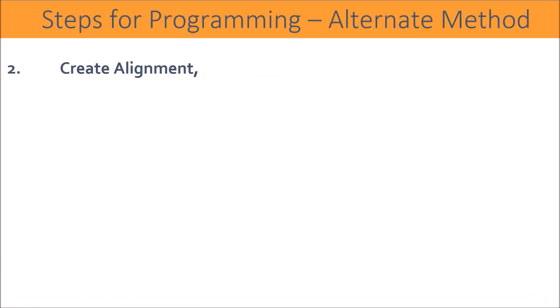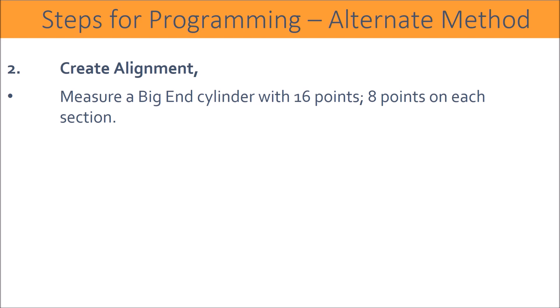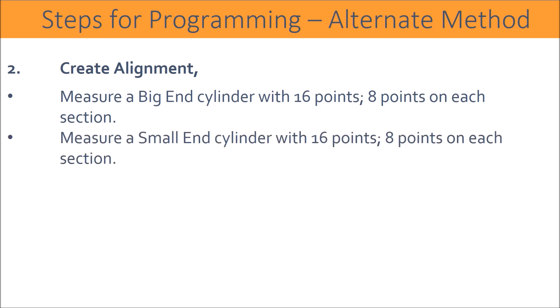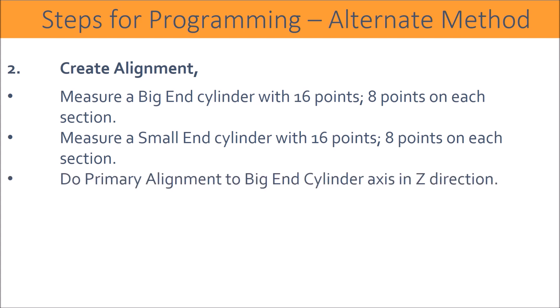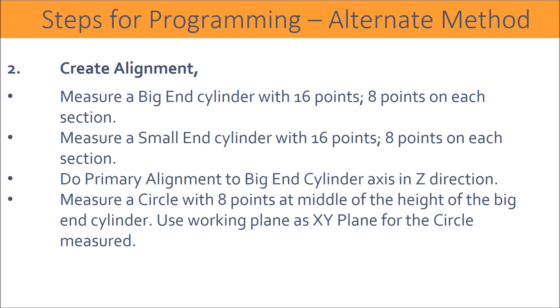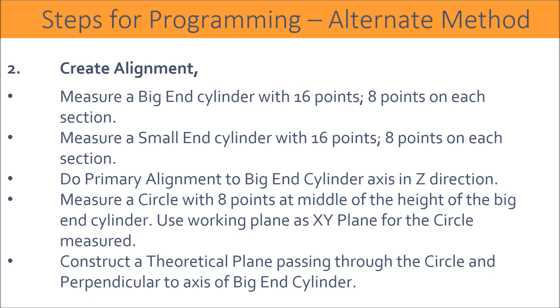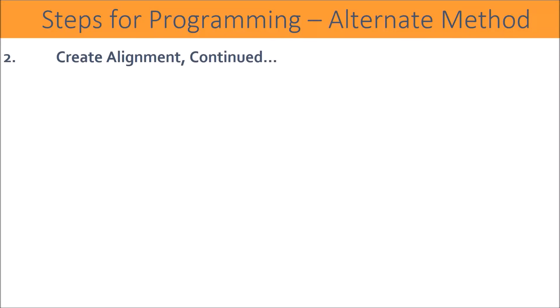Steps for programming alternate method: Create alignment. Measure the big end cylinder with 16 points, 8 points on each section. Measure the small end cylinder with 16 points, 8 points on each section. Do primary alignment to the big end cylinder axis in the Z direction. Measure a circle with 8 points at the middle of the height of the big end cylinder, using working plane XY. Construct a theoretical plane passing through that circle and perpendicular to the axis of the big end cylinder. Create alignment.